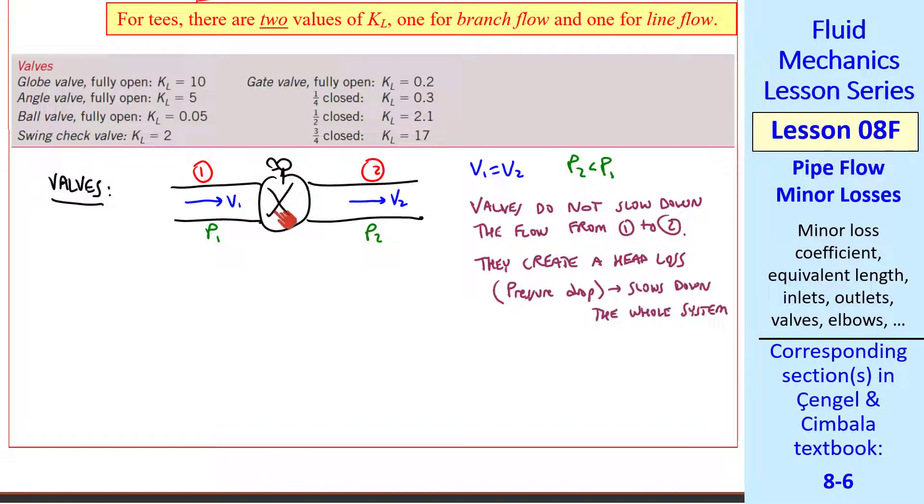When you crank the valve partially closed, V1 is still the same as V2, but you cause a larger pressure drop and a slower flow rate overall.